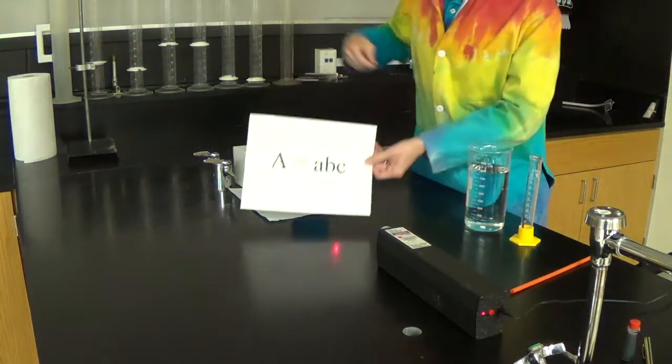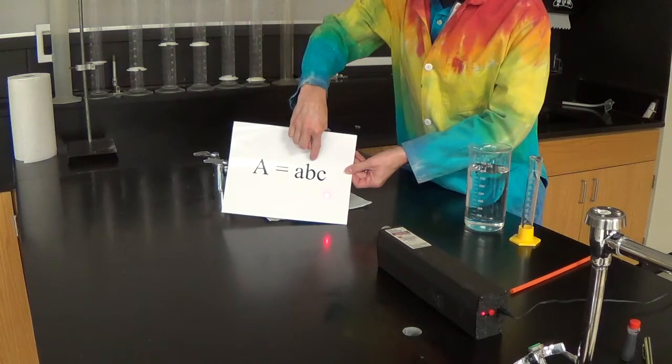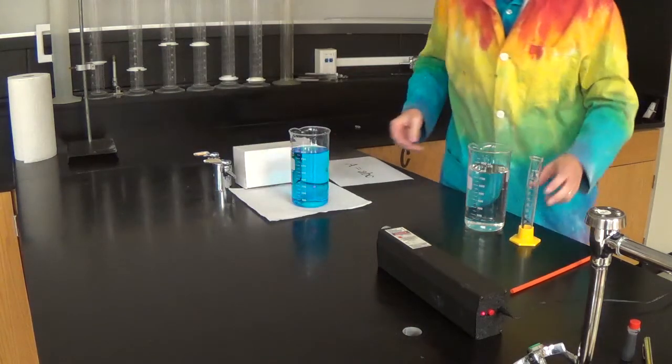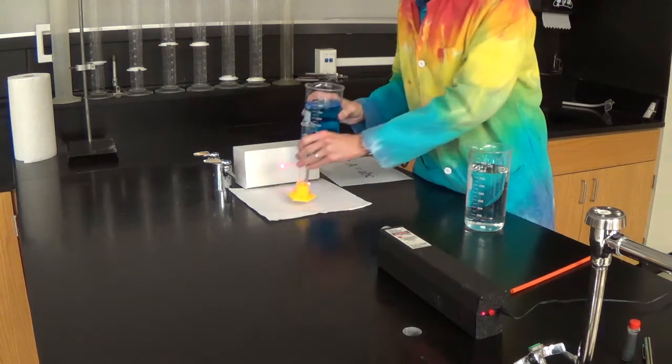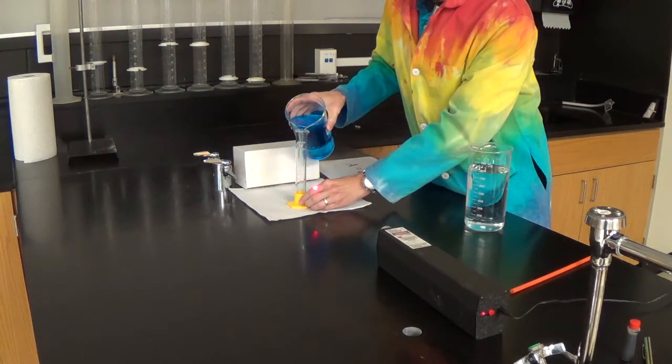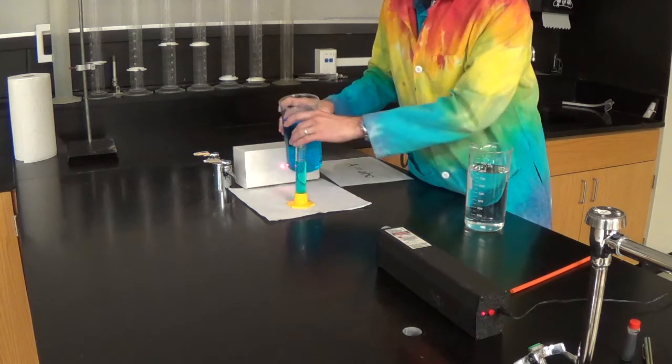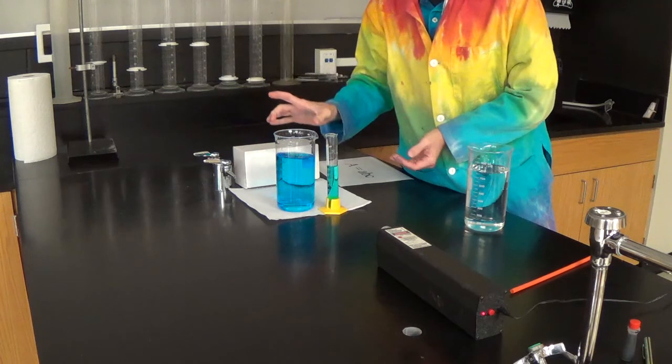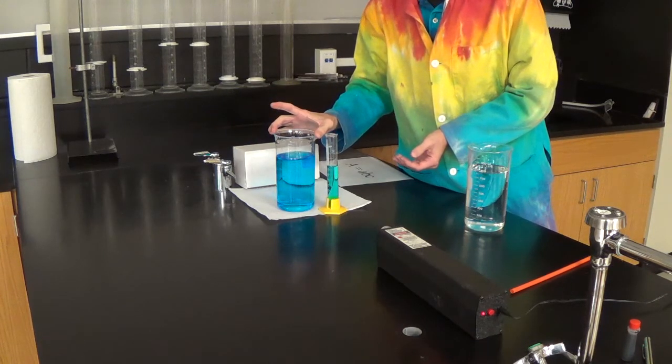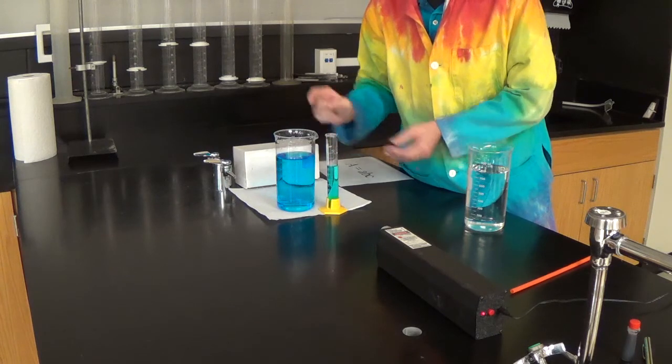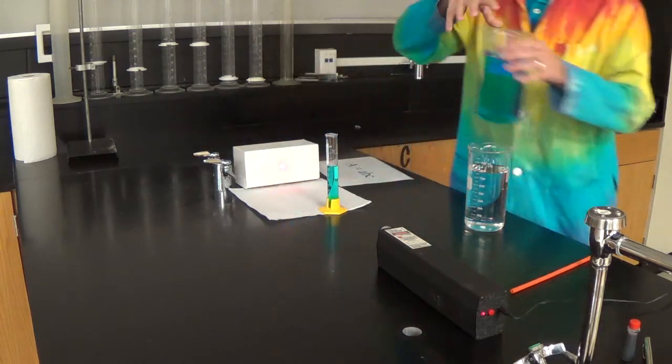Another thing we can change in our equation is the path length. What if we took it from our beaker and instead used a graduated cylinder? How do the path lengths compare? Here the light goes through all of this. Here the light goes through only this. Will that make a difference? Let's predict.